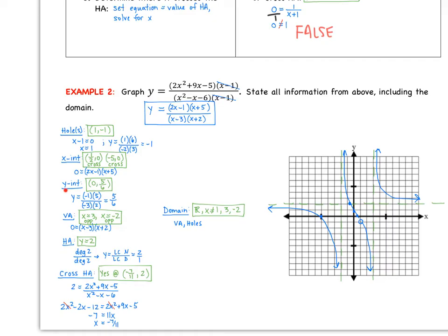The y-intercept is when x = 0. Plugging 0 into the cleaned-up version gives y = 5/6. For vertical asymptotes, set the denominator equal to 0 and solve: we get vertical asymptotes at x = 3 and x = −2. Both factors are degree 1 (odd), so the branches will go in opposite directions along each of these vertical asymptotes.